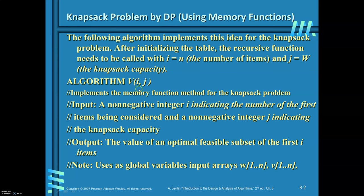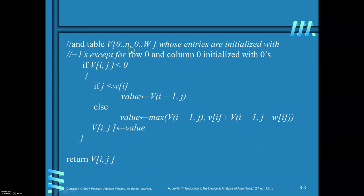The algorithm name is V, and I and J are the parameters passed. I indicates the items and J indicates W, that is, the capacity of the sack. The initial values for I and J are N and W. Global variables used are small w, small v, and capital V. Small w and v are the weights and values of N items, and capital V stores the result of the problem. Initially, all entries are initialized with value minus 1, and the 0th row and 0th column of table V are initialized with zeros.